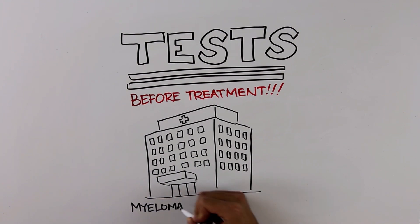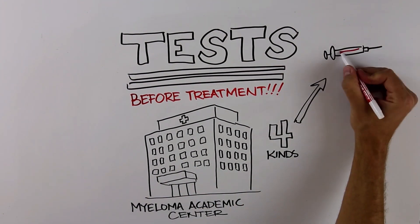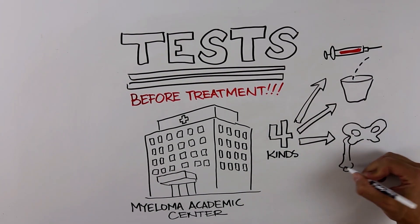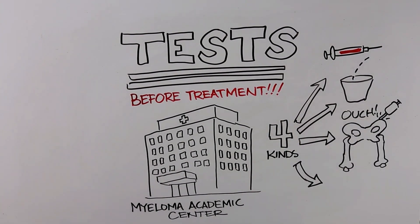A myeloma academic center is a great place to do your initial testing. These tests include blood tests, urine tests, bone marrow biopsies, and imaging tests like MRIs and PET CT scans.